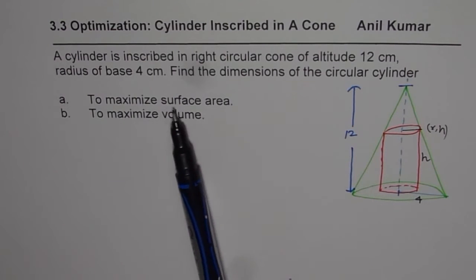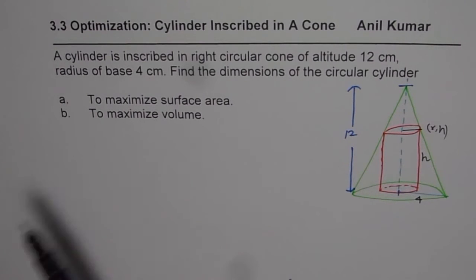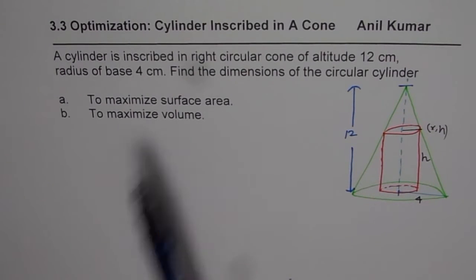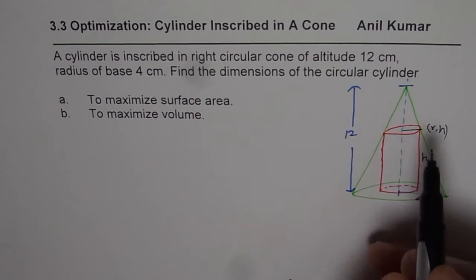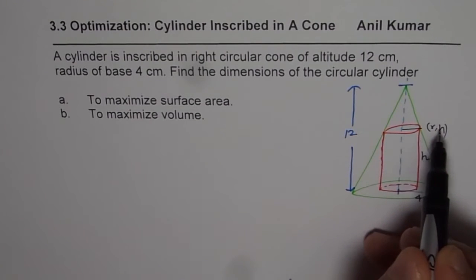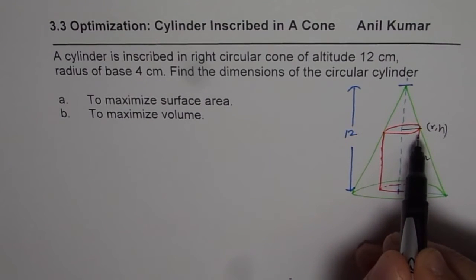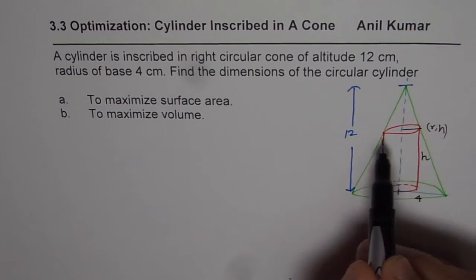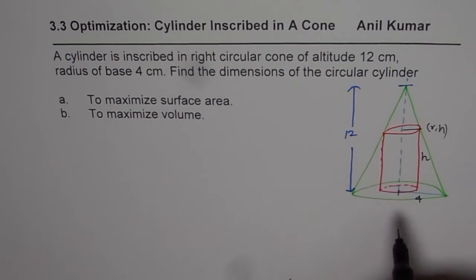We need to maximize surface area. That is part 1. And then we will also see how to maximize volume. The reason of taking both of them together is that we have almost the same strategy. Strategy here is, we are working with two variables, radius and height. We need to find relation of one variable with respect to the other. How do we do that in this scenario?